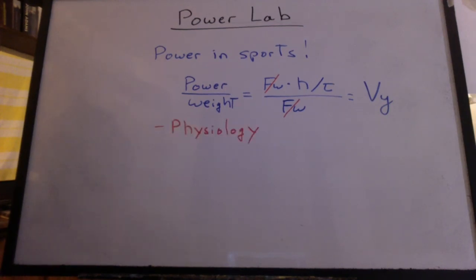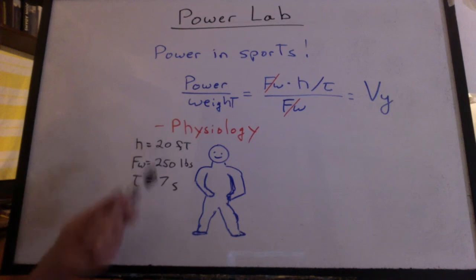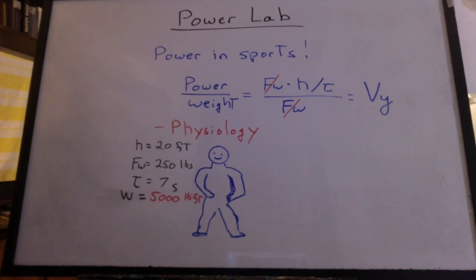But it needs a little more for a physiology point of view. Let's say we have a big football player run up the height of the stairs, 20 feet, weighs 250 pounds. He does it in seven seconds. That person's going to do 5,000 pound feet of work with a power output of 714 pound feet per second.